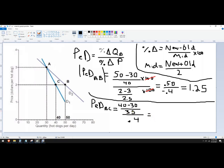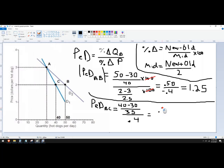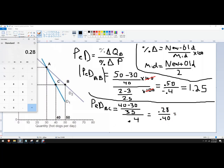So it's 40 minus 30 divided by halfway there is 35. So what is that? It's 10 over 35. 10 over 35 is 0.28. So 0.28 or 28% divided by 0.4, which is 40%.